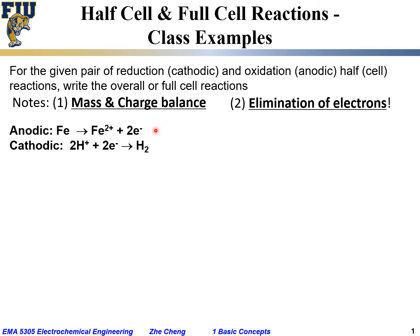Let's look at the first example. The anodic or oxidation half-cell reaction is for iron atom to give out two electrons and become Fe²⁺. On the other hand, the cathodic or reduction half-cell reaction is for the proton or H⁺ ion to combine with electrons to form hydrogen gas H₂.